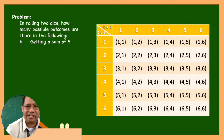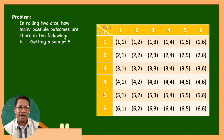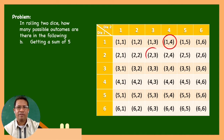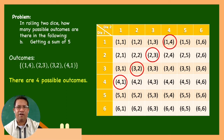Let us answer letter B: Getting a sum of 5. Let us identify the pairs whose sum is 5. The outcomes are (1,4), (2,3), (3,2), (4,1). There are 4 possible outcomes.